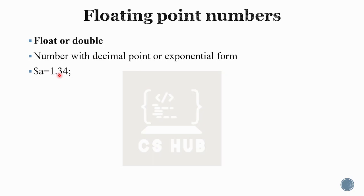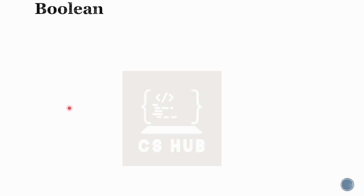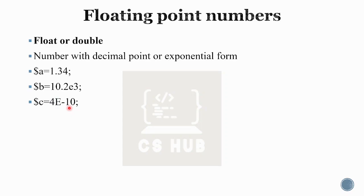For the float data type: $a = 1.34, $b = 10.2e3, or 4e-10. If you want to represent a double, you can use a decimal point or exponential notation. PHP supports these float data types.